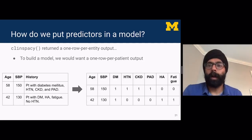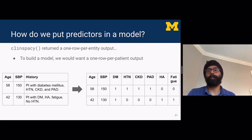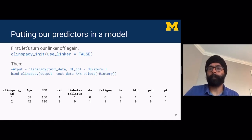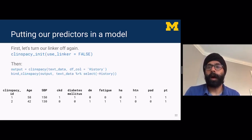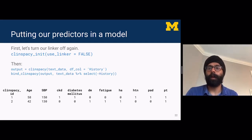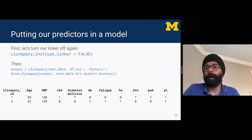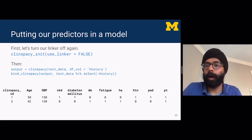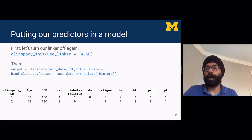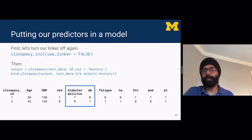To put predictors in a model, ClinSpaCy returns one-row-per-entity output, but we want one-row-per-patient. We use clinspacey_init with the linker off, then use the bind_clinspacey function, which takes the ClinSpaCy output and adds a column for each identified entity using the lemma, with values representing counts. It didn't fully solve the diabetes mellitus and DM issue, but otherwise this is close to what we wanted.